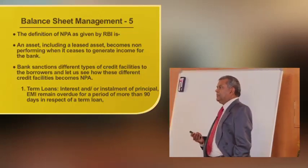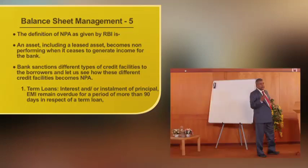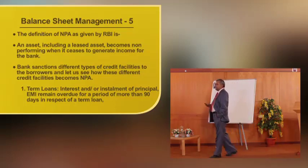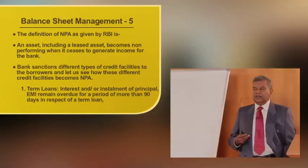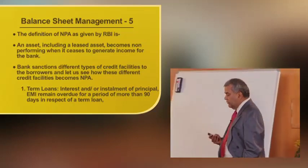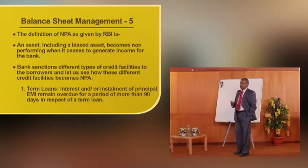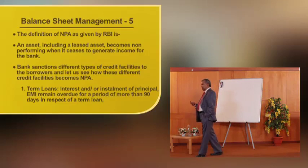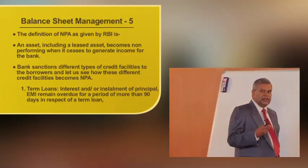Banks sanction different types of credit facilities — fund-based and non-fund-based — and even within fund-based, it can be a term loan or cash credit. Let us see how different credit facilities become NPA. In the case of term loans, which finance most fixed assets, the EMI consists of principal and interest. Initially when repayment starts, the interest component is very high and the principal component is very low.